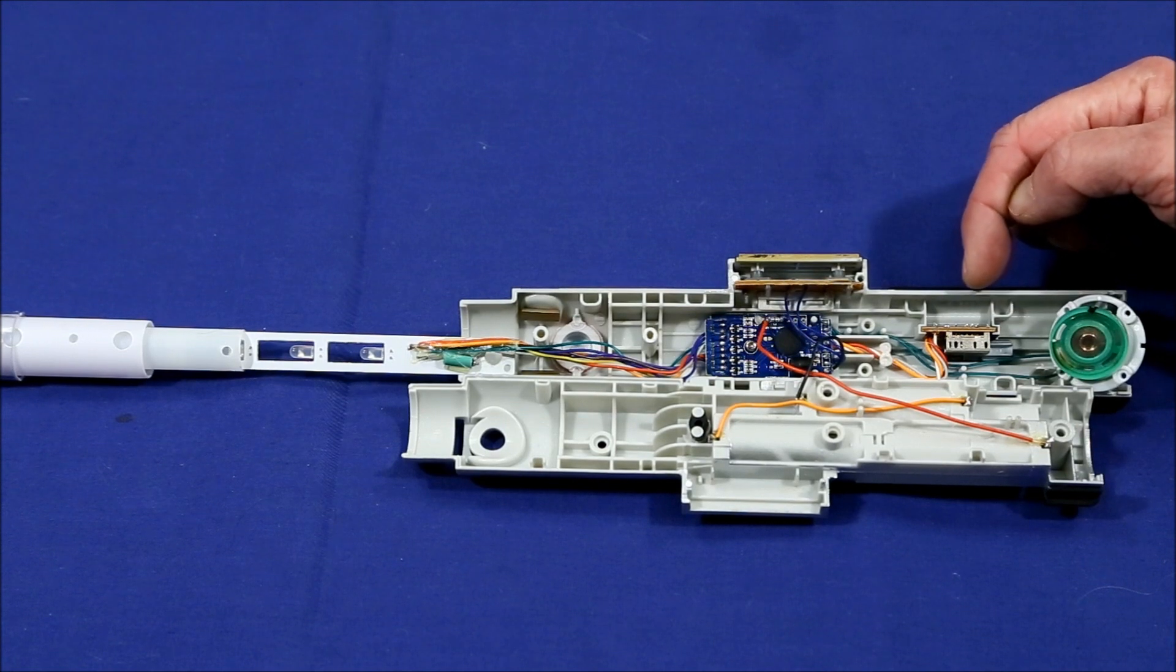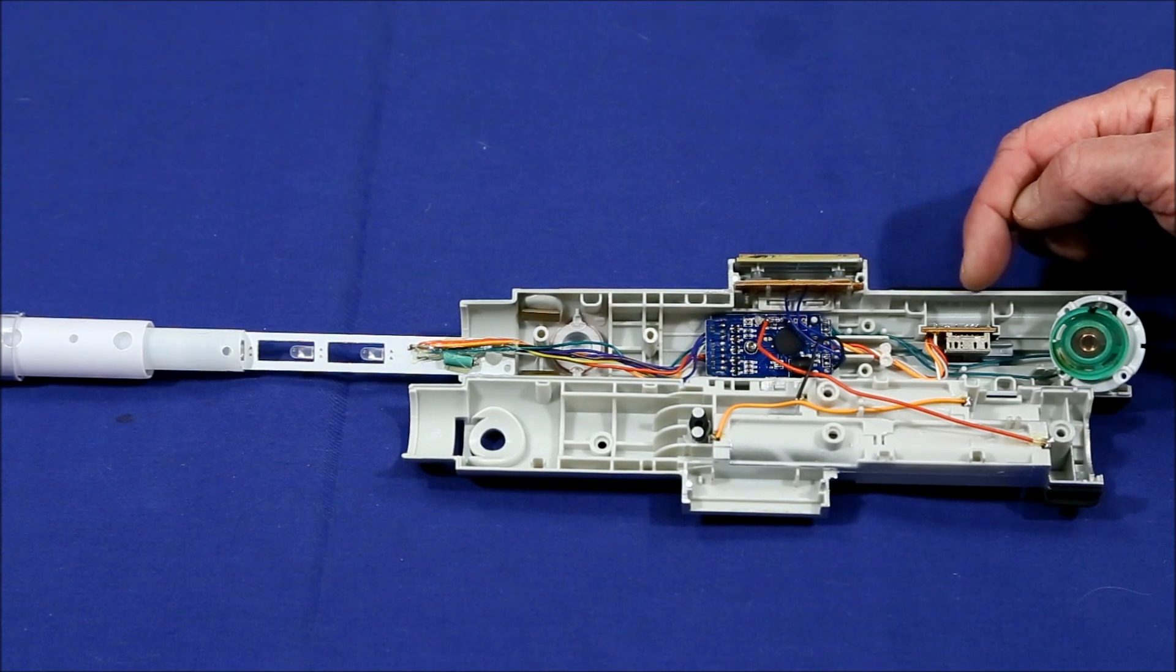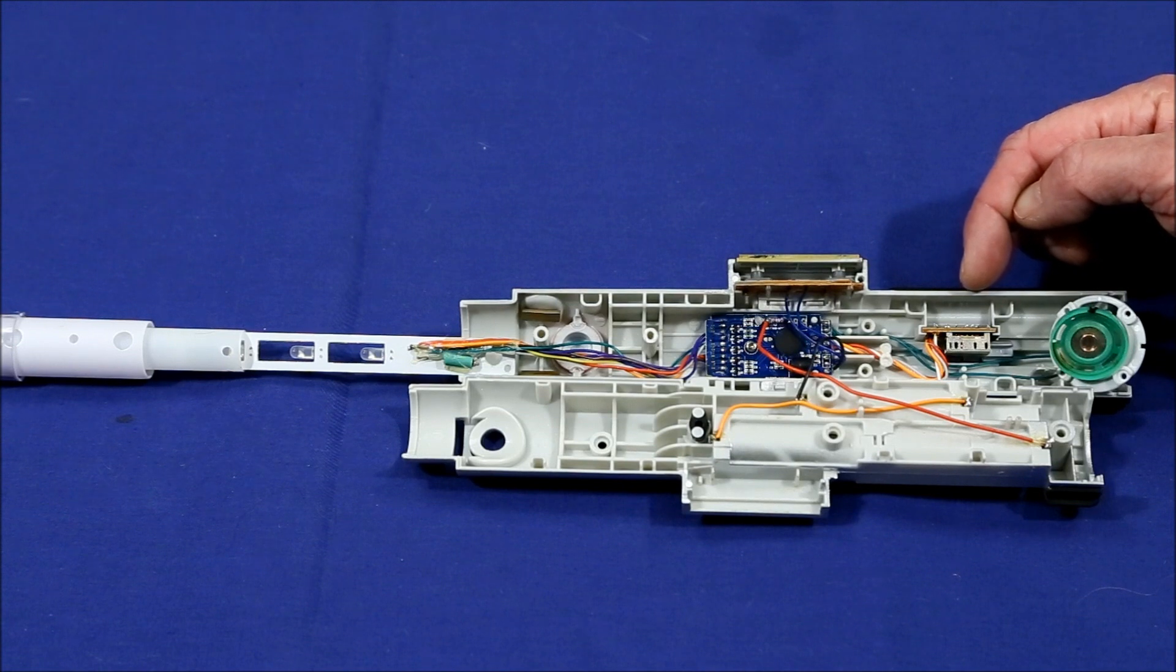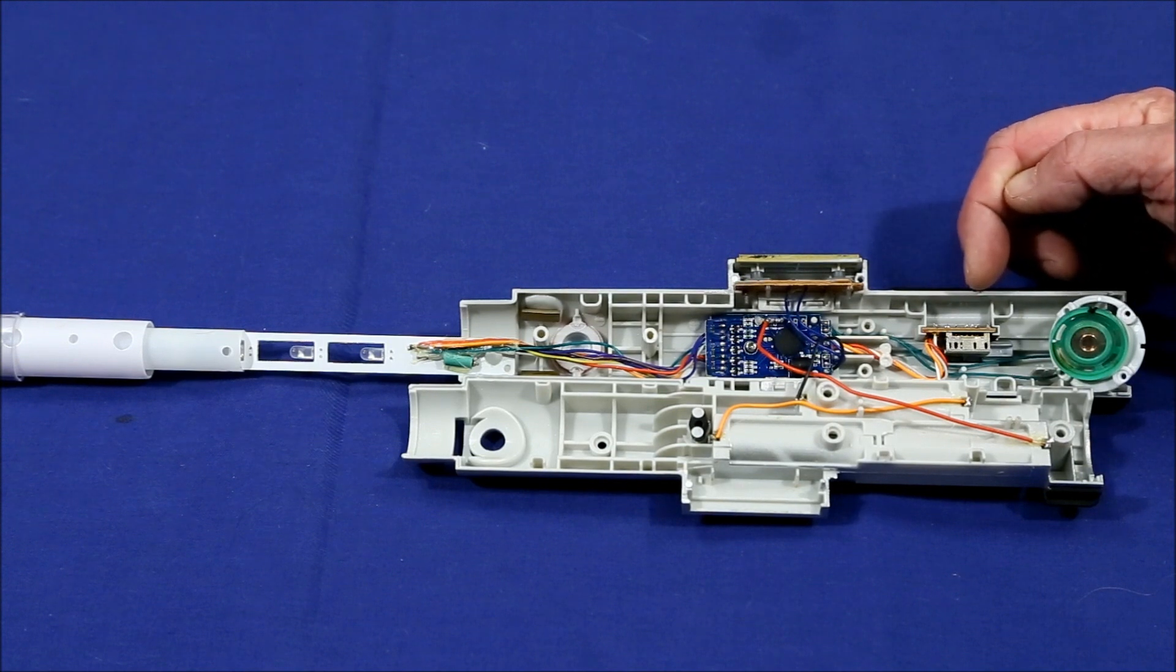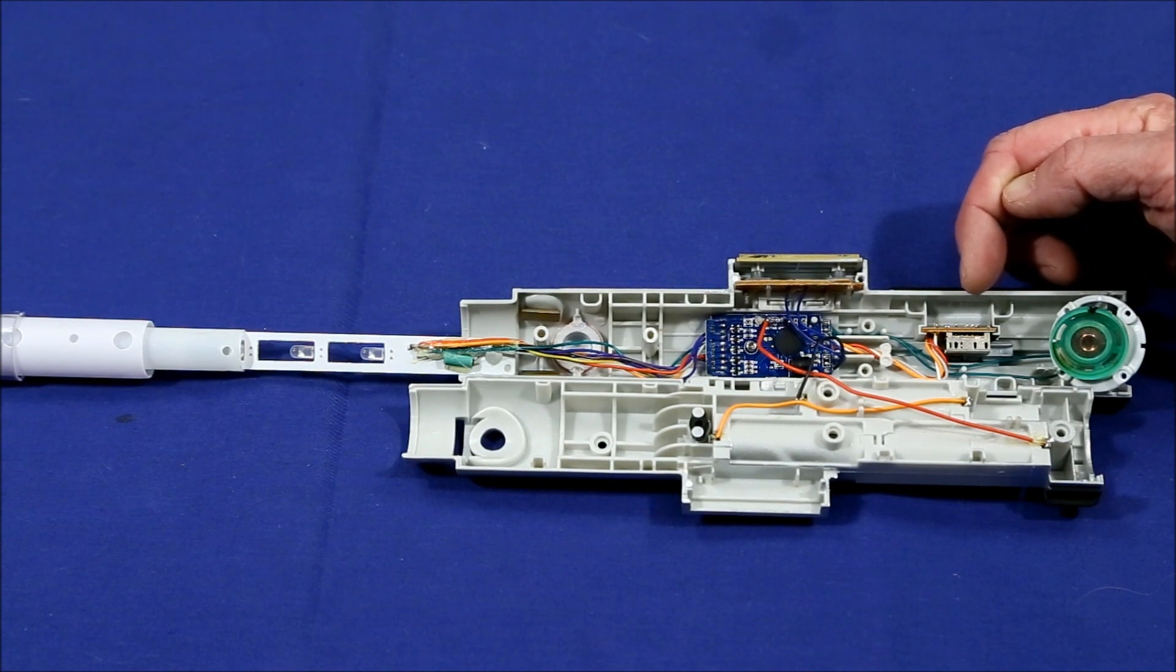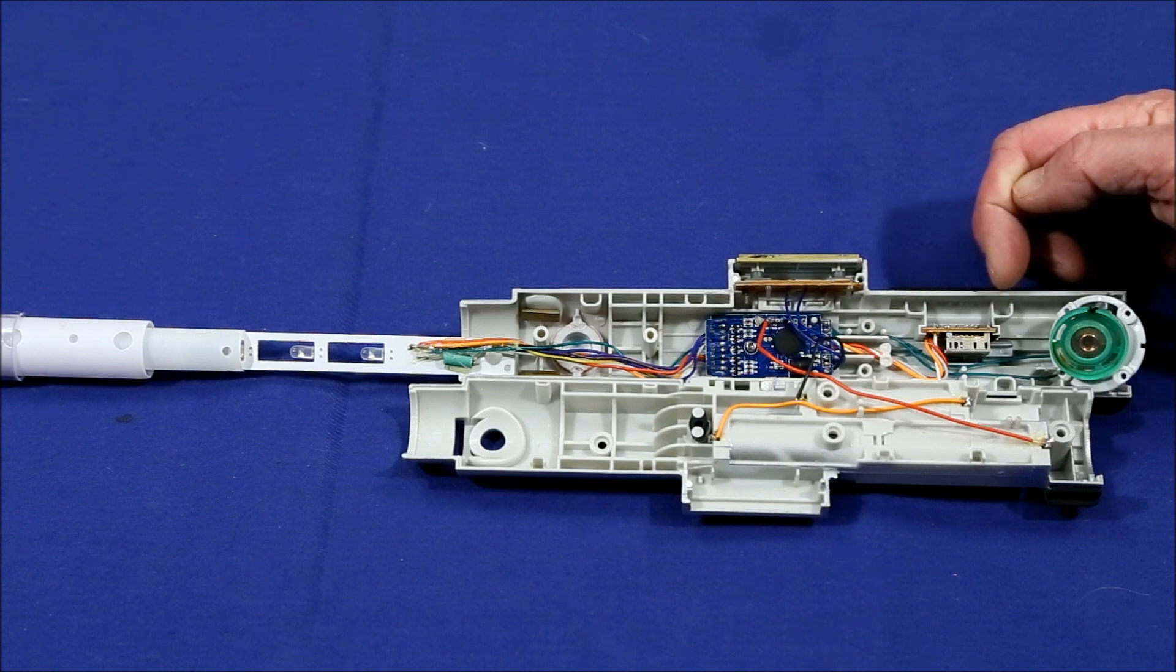This is the switch which has three positions. One is totally off. The middle position is for the display mode in the store. This is the position that allows you to press the on and off switch and get a few seconds demonstration of what the lightsaber does. And then the full on position which allows you to use the lightsaber continuously.